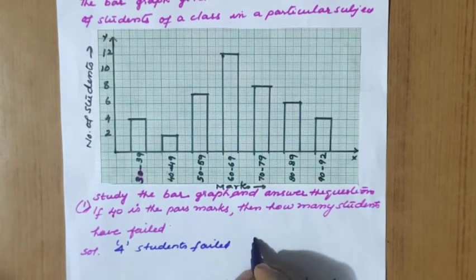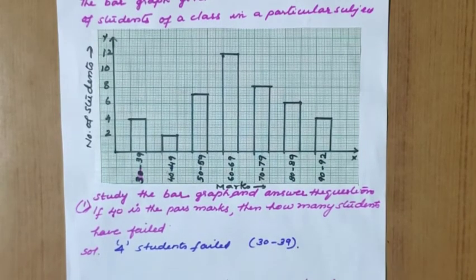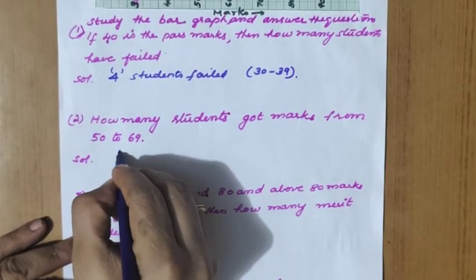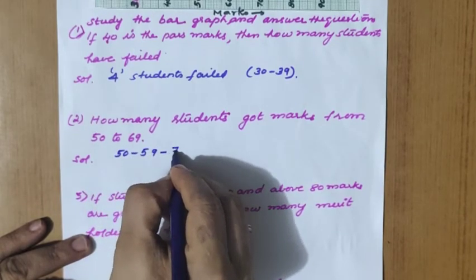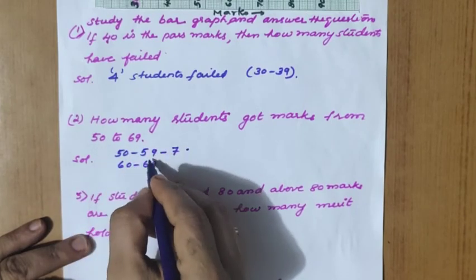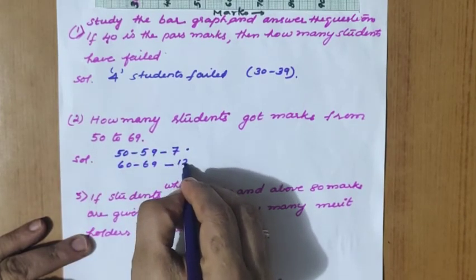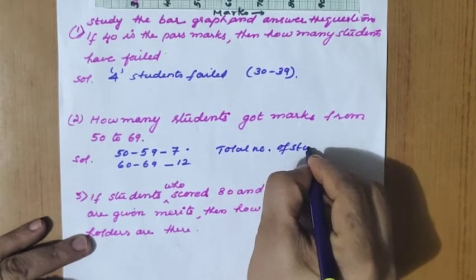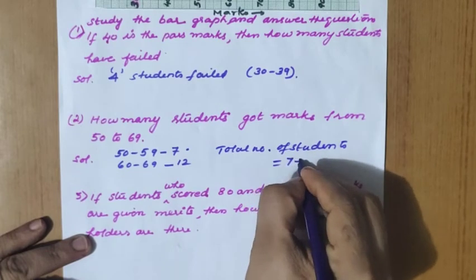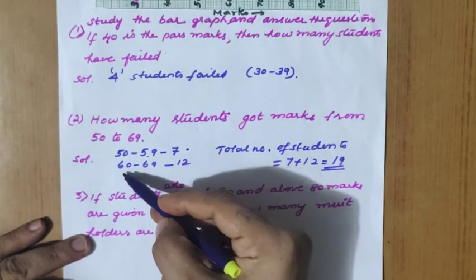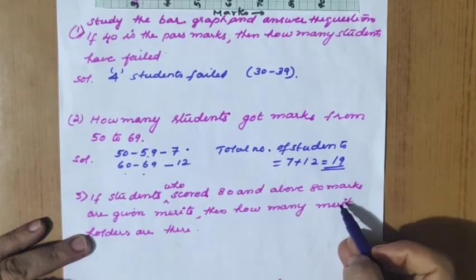Students who failed scored in the 30–39 range, not reaching 40. Next question: how many students got marks from 50 to 69? This covers two groups: 50–59 with 7 students and 60–69 with 12 students. Total = 7 + 12 = 19 students scored between 50 and 69.